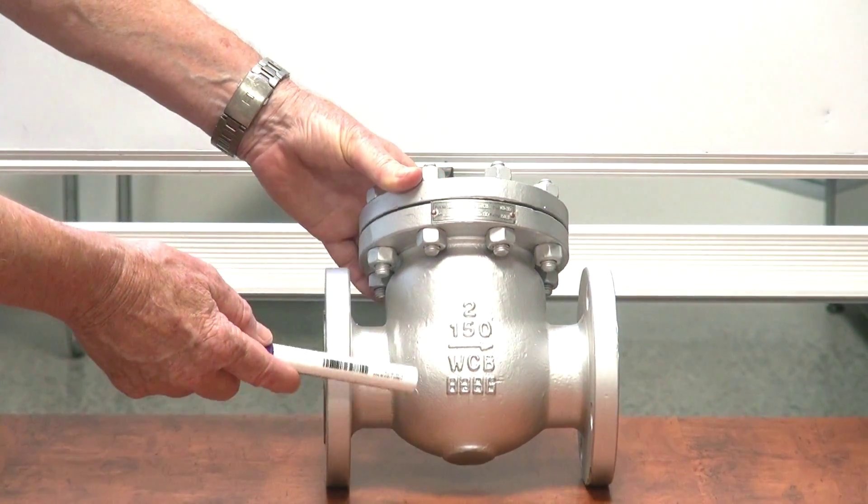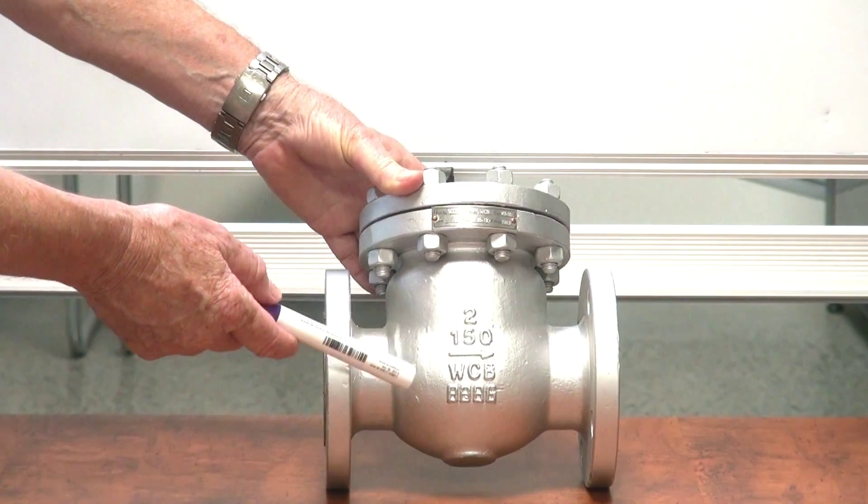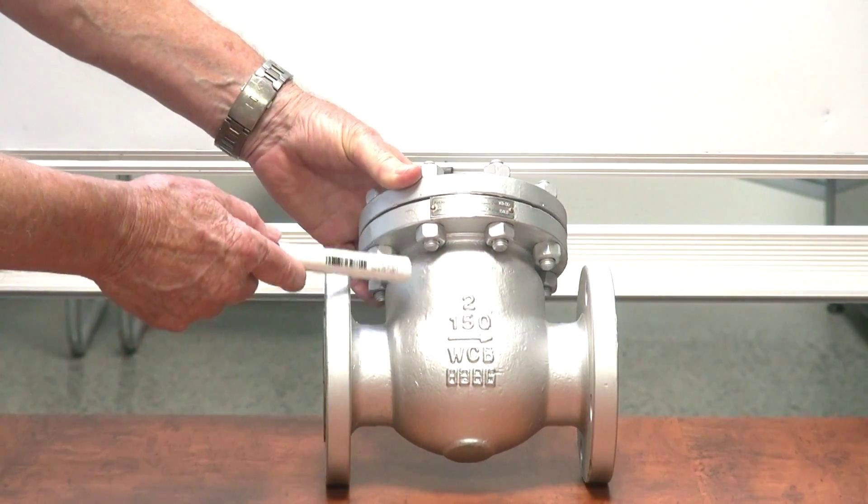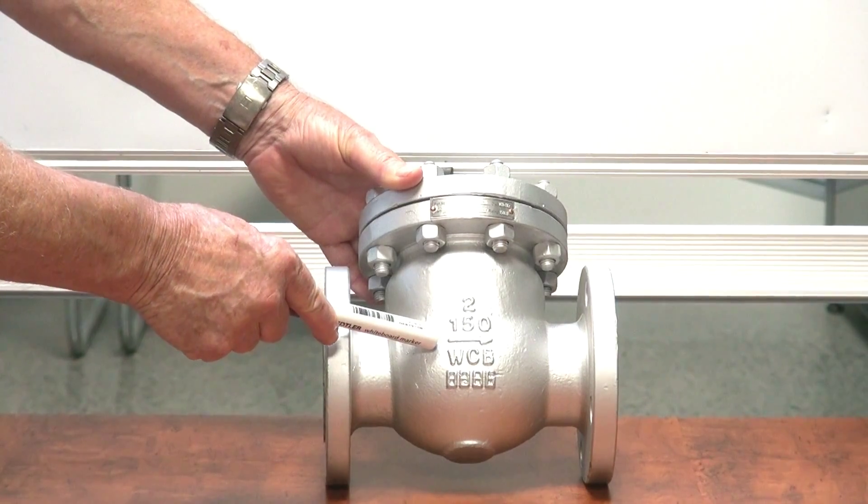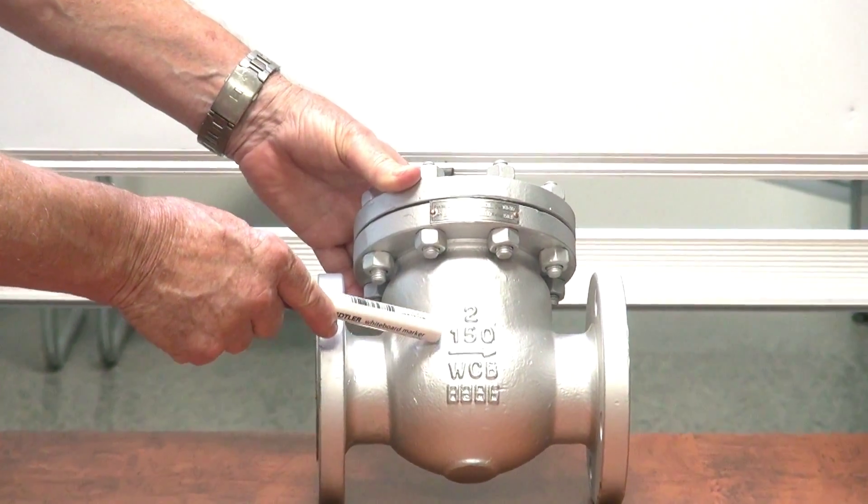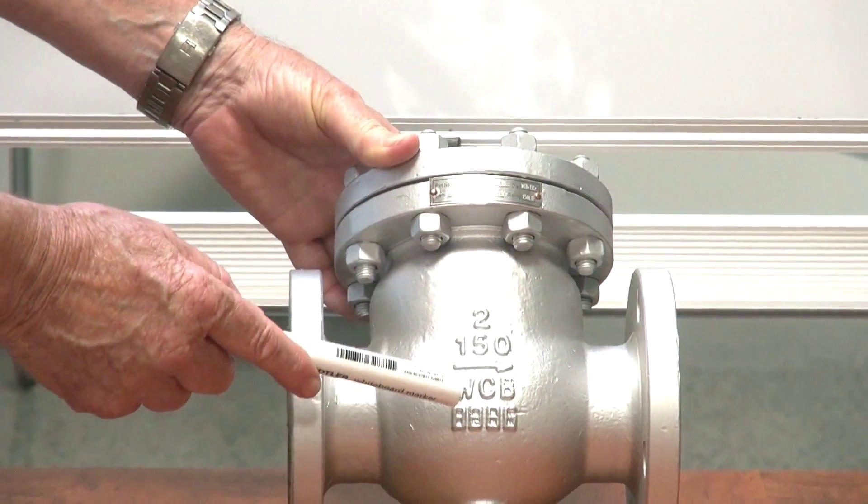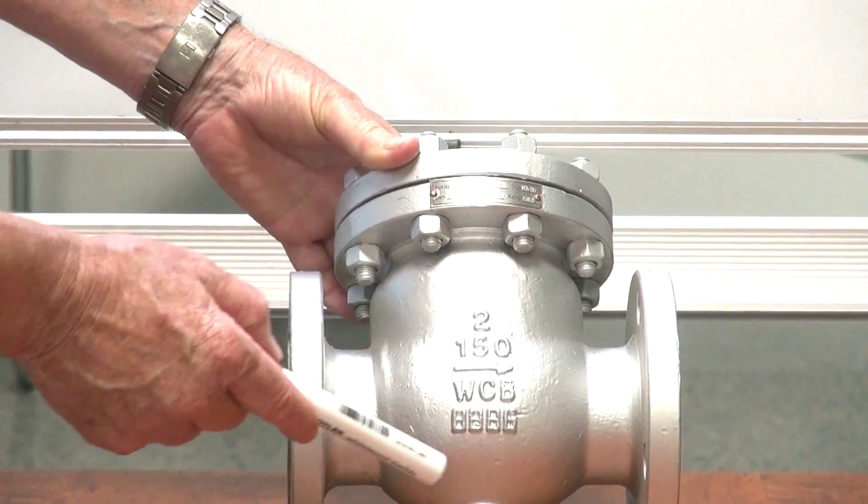The big advantage of them is that they have virtually full flow. There's a direction of flow on here with the arrow. These are NC150 so they're about 20 bar pressure, WCB broadcast grade B.